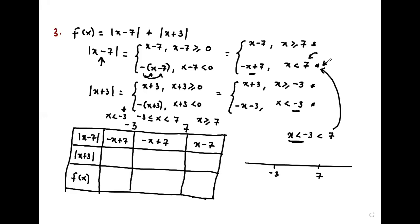When x is bigger than negative 3 but less than 7, this definition is satisfied. X is bigger than negative 3, so it will be x plus 3. It remains x plus 3 even if x goes beyond 7. Suppose x is 9 — it's true that 9 is bigger than negative 3, so it still remains x plus 3. Now we have the pieces depending on the intervals.